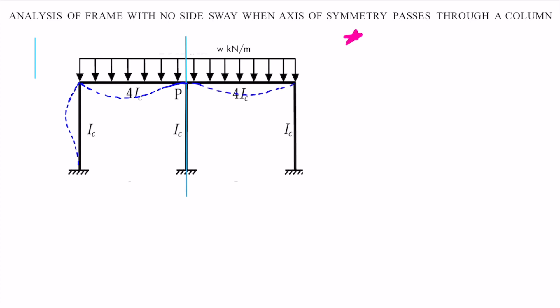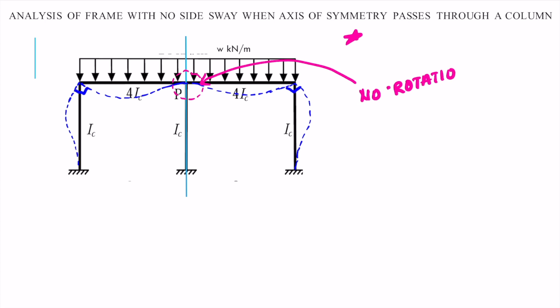Under the given loading, this angle will be 90 degrees and this angle will also be 90 degrees. If you see the deflection pattern under this symmetric loading, you can observe that at joint P, which is on the axis of symmetry, there is no rotation. Also, the central column has no deformation as well. So we can note this point: at joint P there is no rotation, and because of which the central column has no deformation.